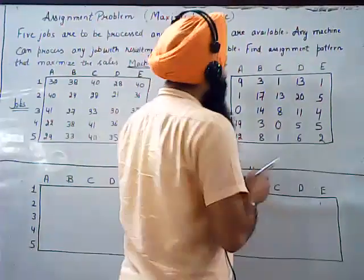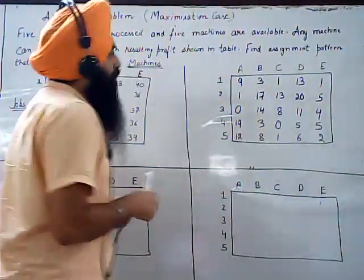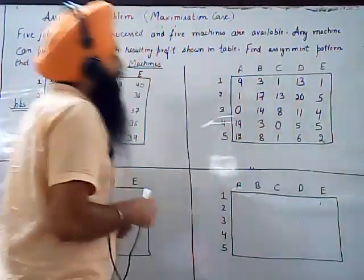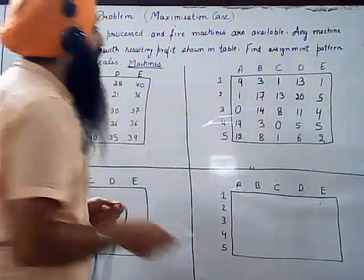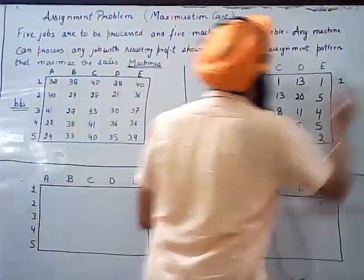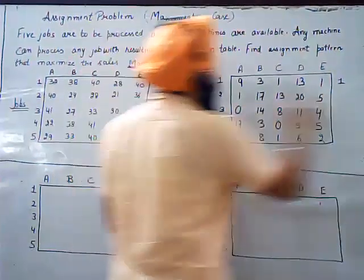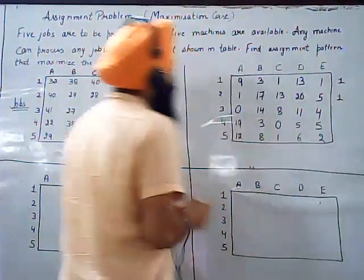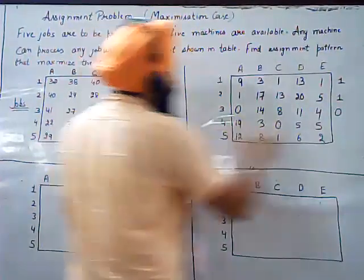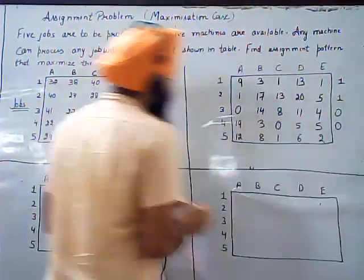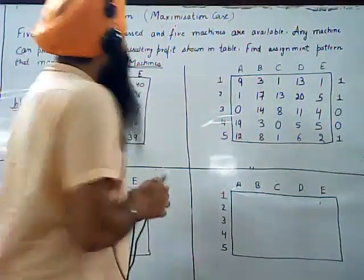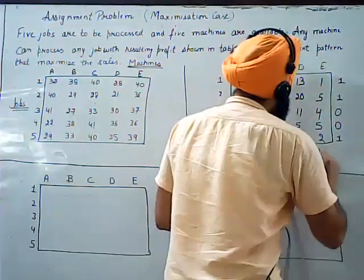The next step is row reduction. We find the smallest value from each row and subtract it from the entire row. The smallest value in row one is 1, in row two is 1, in row three is 0, in row four is 0, and in row five is 1. This step is known as row reduction.